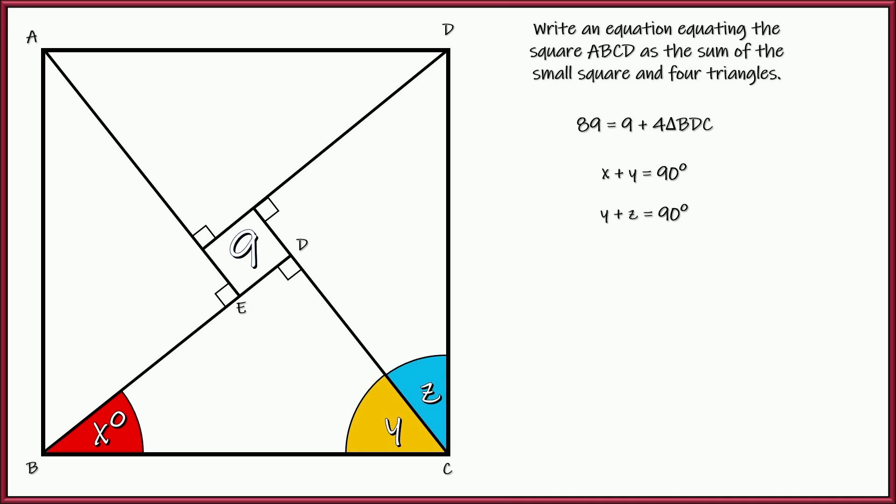Now, because we have a square BC and DC, they are perpendicular, so y and z are also complementary. That means that x and z are exactly the same. And we could chase that same idea all the way around the square to show that all of these triangles, all four of them, are exactly the same as triangle BCD.